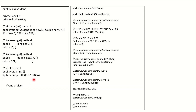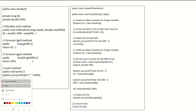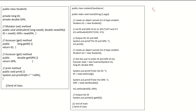We don't have a main method in this class, so to compile and run our program we need one. I will create another file called public class StudentClassDemo and add a main method: public static void main. The first statement says go and create an object named st1 of type Student. The way to create this object is: Student st1 = new Student.